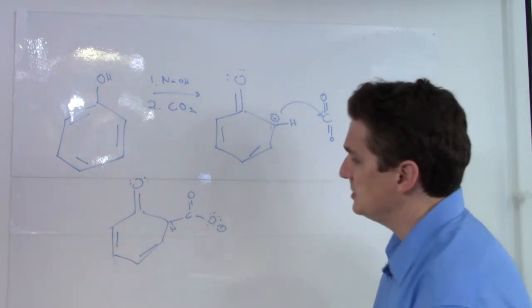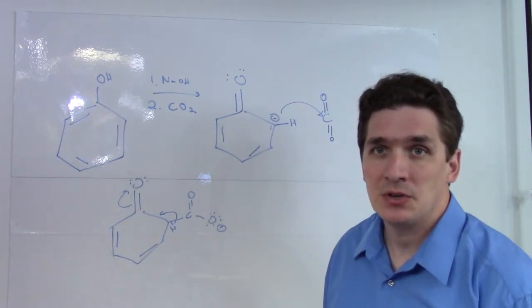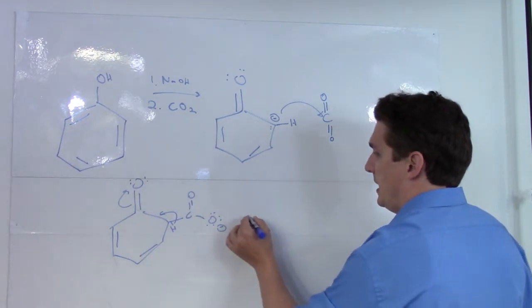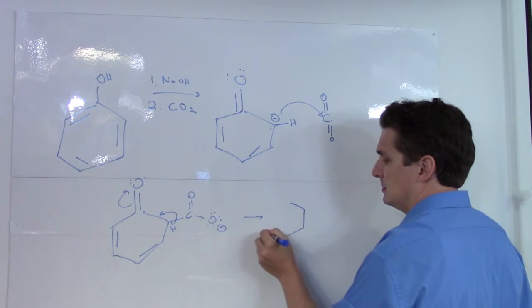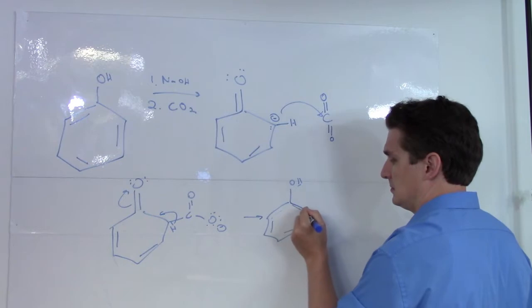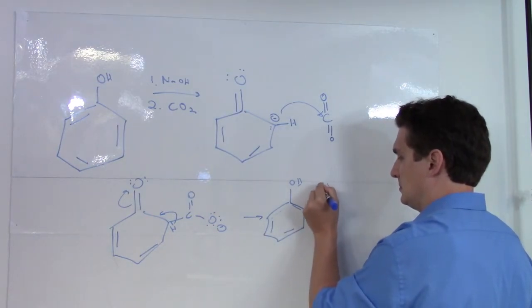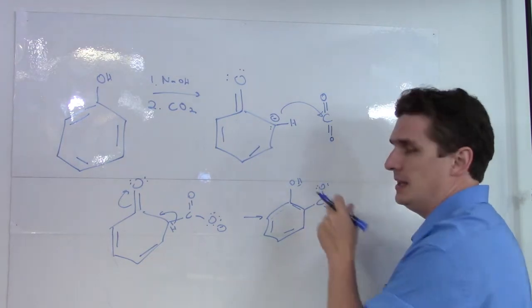Now, as with most of these reactions, we end up having the hydrogen give up its electrons back to the benzene ring so we can recover aromaticity. And what we will finish with is a carboxylate ion and the phenol.